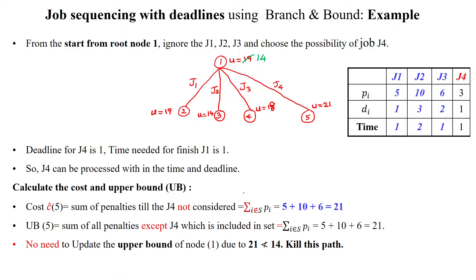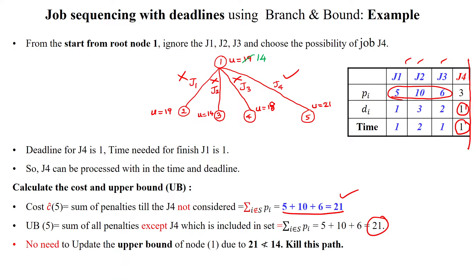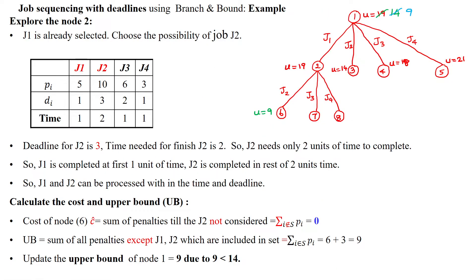The next possibility: ignore all three jobs j1, j2, j3 and select job 4. Deadline is 1 and time is 1, so it is feasible. Until job 4, three jobs were ignored, giving cost 5 + 10 + 6 = 21. Upper bound is also 21 (sum of all except job 4). Since 21 is greater than the minimum upper bound of 14, we kill this path as well.